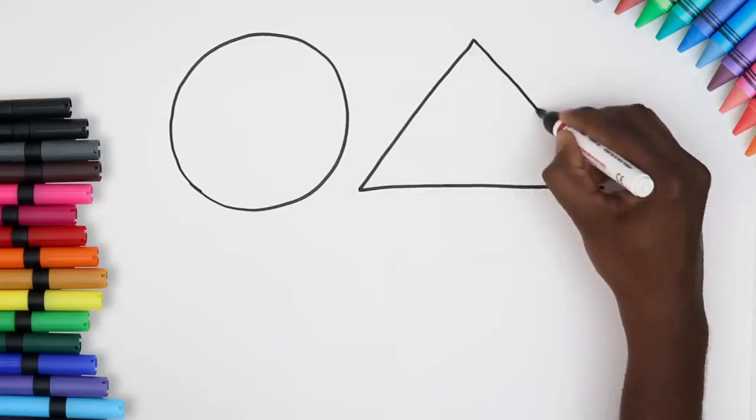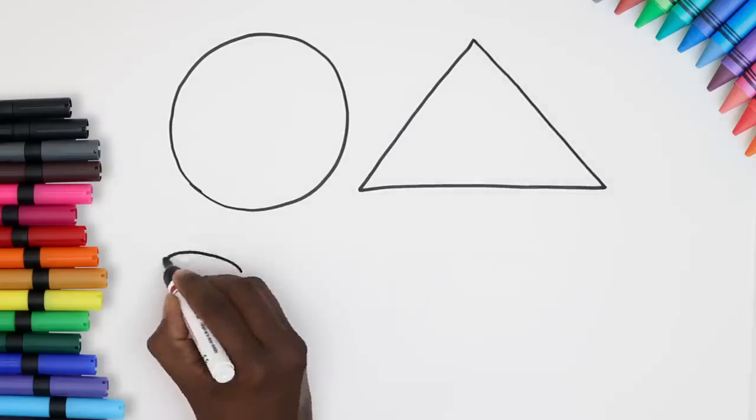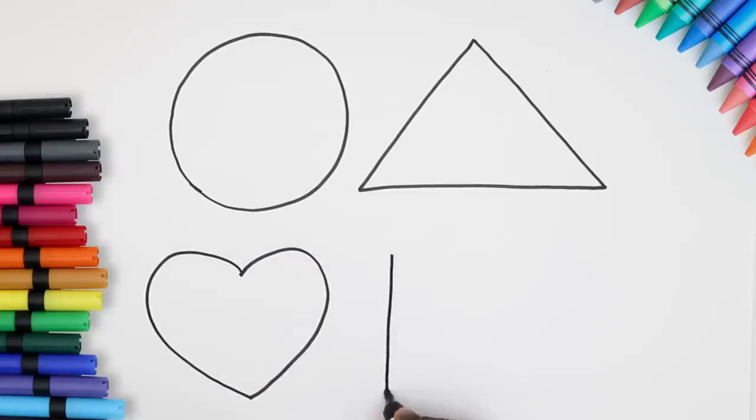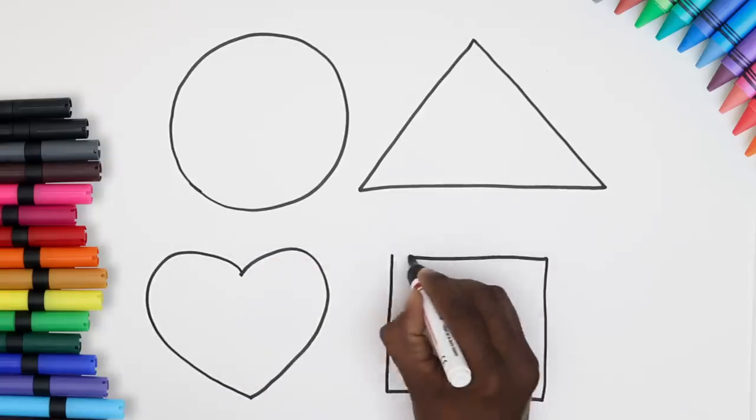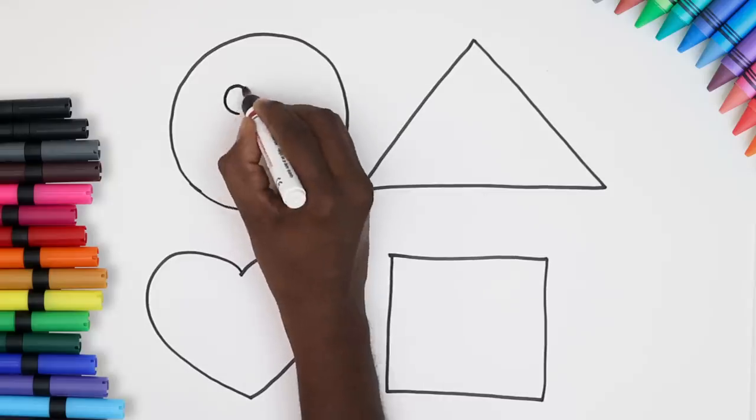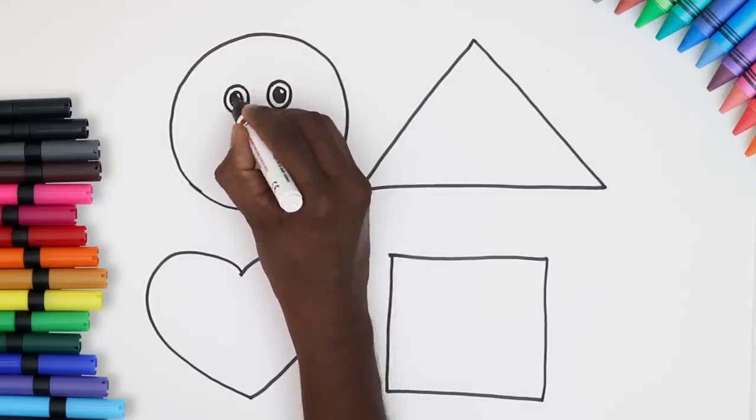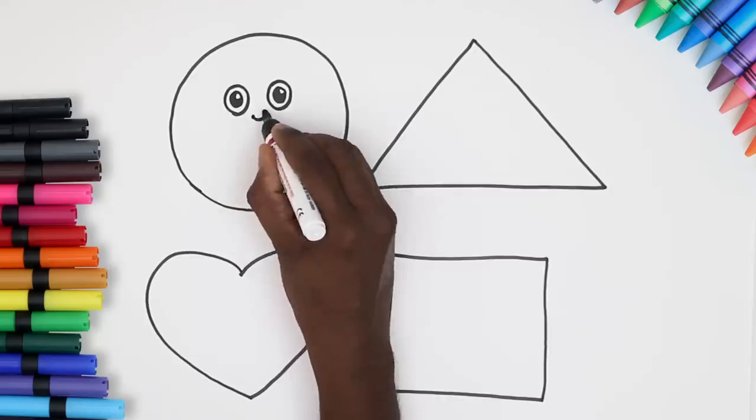Yay! Can you guess the next one? It's a heart. And the last one, a square. Wasn't it easy? It's time to give our shapes happy faces. Draw eyes. Color the pupils in. And a cute little smile.